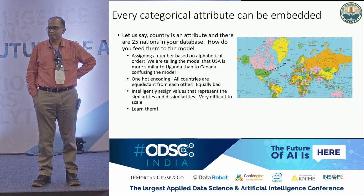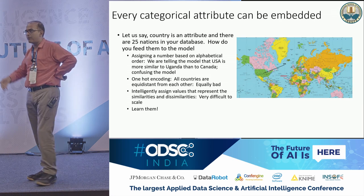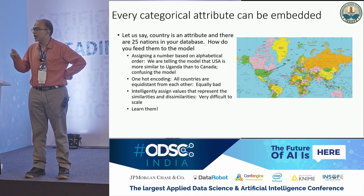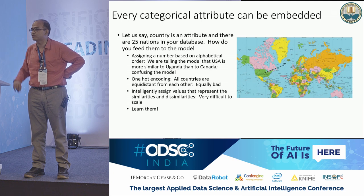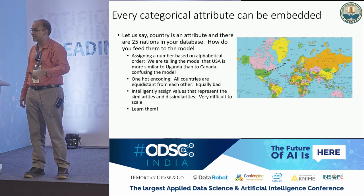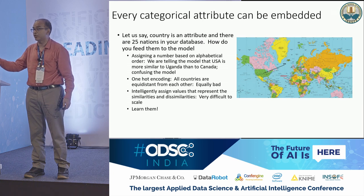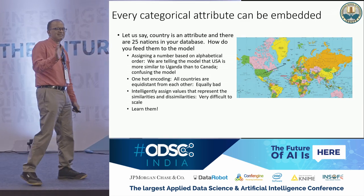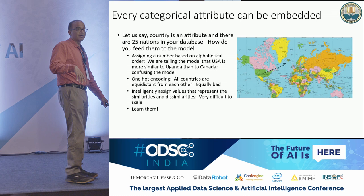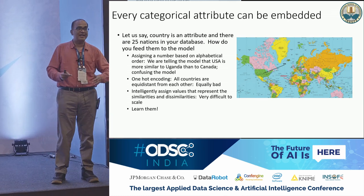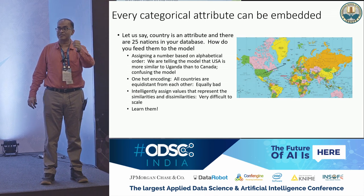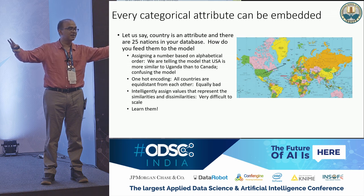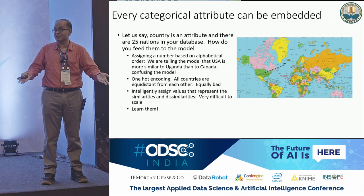One way is to assign them ordinal values 1 through 25. The problem is you're telling the model that USA at 25 and Uganda at 24 are more similar than USA and Canada at 2 — based on lexicographic order — which confuses the model unnecessarily. So machine learning chose to use dummy encoding instead: USA as 1,0,0,0; Uganda as 0,1,0,0; Canada as 0,0,0,1. But now you're telling the model all countries are equidistant from each other. That's equally bad. Yet for 75 years machine learning was practiced that way.